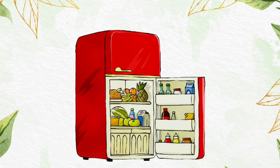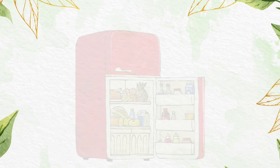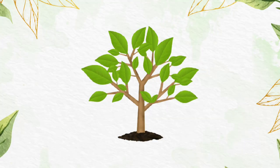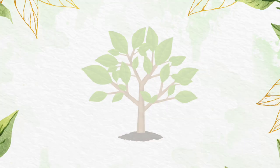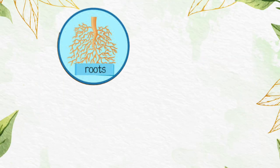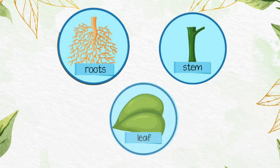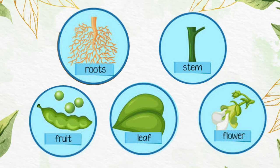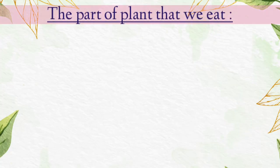Children, like we store our extra food in refrigerator, plants also store their extra food in different parts. Some plants store their food in roots, some in stem or leaf. Some plants store in flower, fruit or seeds. And these extra foods stored by the plants are eaten by us. Now, let's learn the parts of plants that we eat.